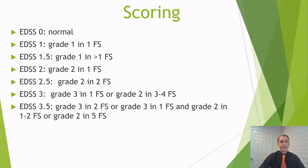When you take all of the functional systems, you put them together and create a total score. An EDSS of 0 would be normal. EDSS of 1 would mean grade 1 in one functional system. EDSS 1.5 would be grade 1 in greater than one functional system — two or more. EDSS of 2 would be grade 2 in one functional system. EDSS 2.5 is grade 2 in two functional systems. EDSS 3 would be grade 3 in one functional system or grade 2 in 3 to 4 functional systems.